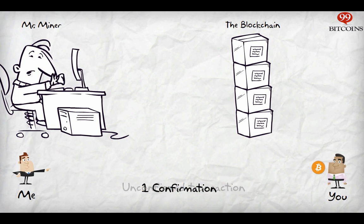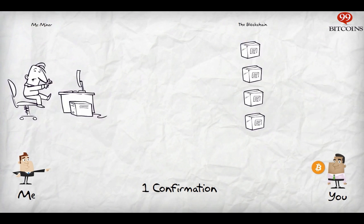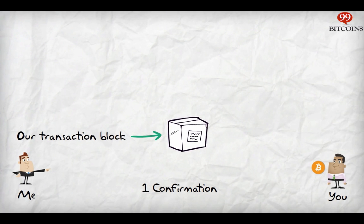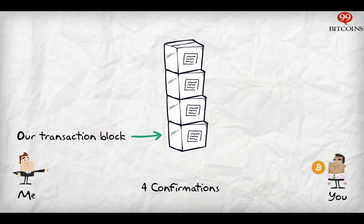At this point, the transaction will have one confirmation. Blocks are ordered one after the other, dictating the exact transaction order — hence the name, blockchain. Over time, other blocks will be built over the block containing our transaction. The more blocks built, the more confirmations you will see, and the risk of me succeeding in double spending this Bitcoin will reduce.